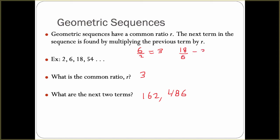Then we have 18 divided by 6, which is 3, and 54 divided by 18, which is also 3. So if you don't see what the common ratio is, take the term and divide it by the previous term.